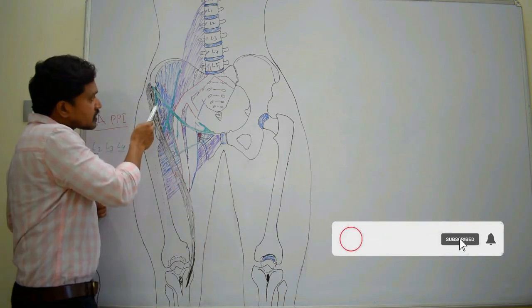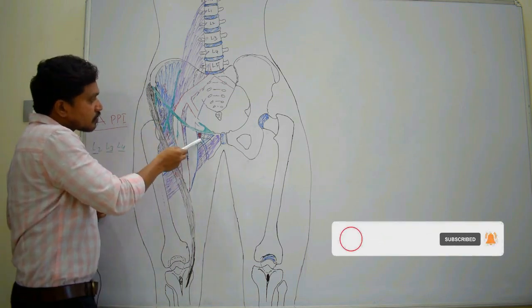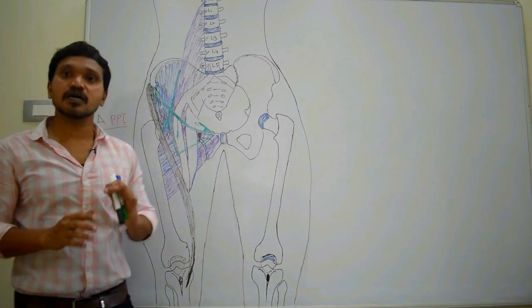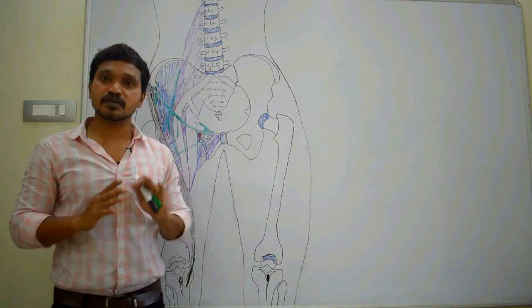After that, lateral cutaneous nerve of thigh, deep inguinal group of lymph nodes, and nerve to the pectineus. These are the different boundaries and contents of femoral triangle.